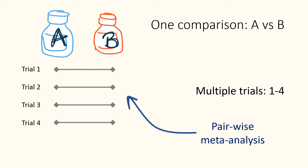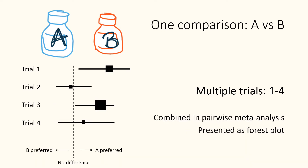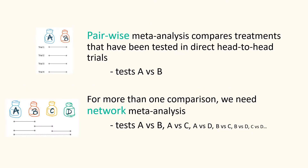A pairwise meta-analysis pools the results from trials that directly compare treatments A and B. It takes the relative effect of treatment B compared to treatment A from each trial and combines them, giving more weight to the larger studies — those with bigger squares — to give an overall effect. Pairwise meta-analysis is a powerful method for combining evidence from head-to-head trials on a single comparison, but it cannot compare several treatments and suggest the best.